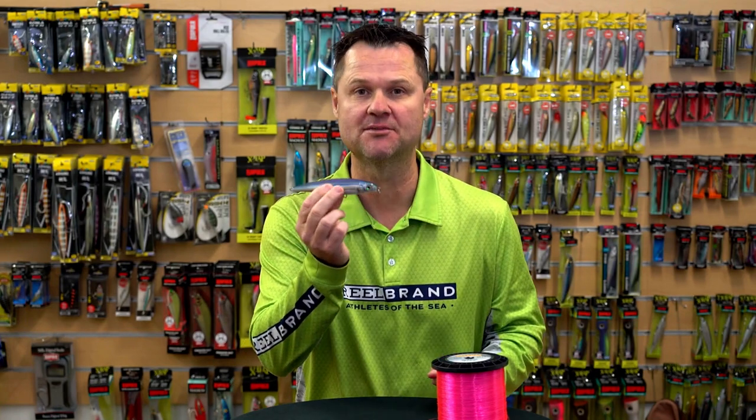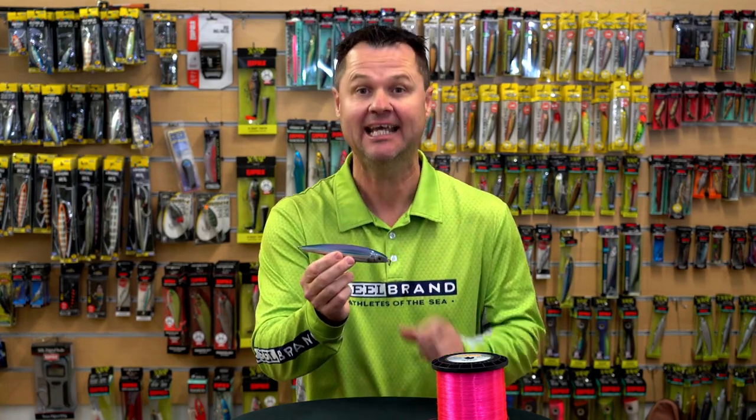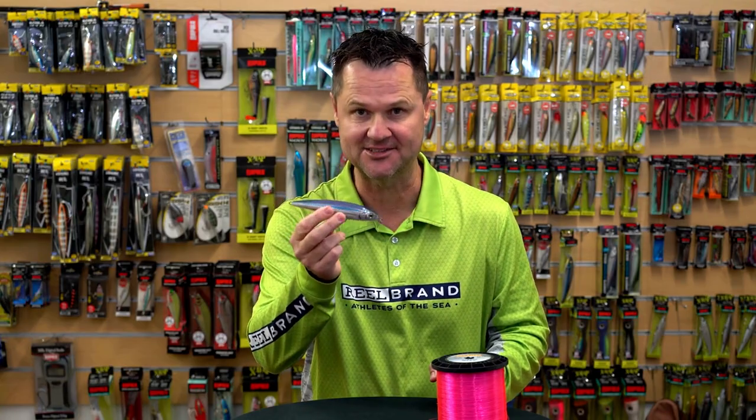When attaching lures to leader, you want them to swim absolutely perfectly, and that's why we use a loop knot. And this is what it looks like.